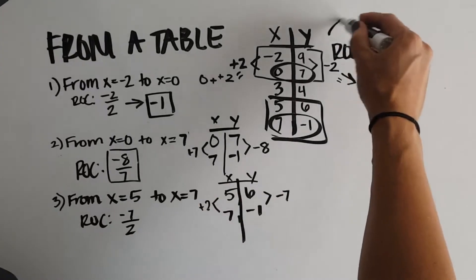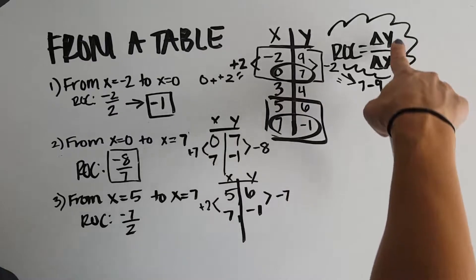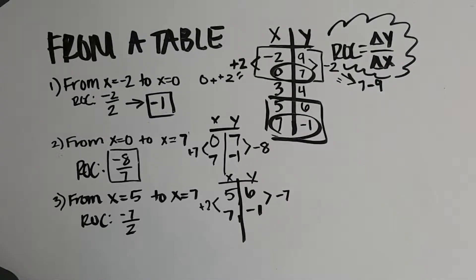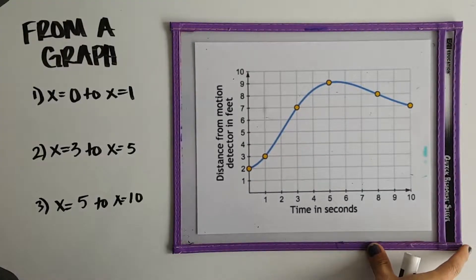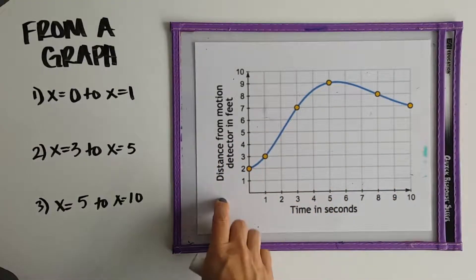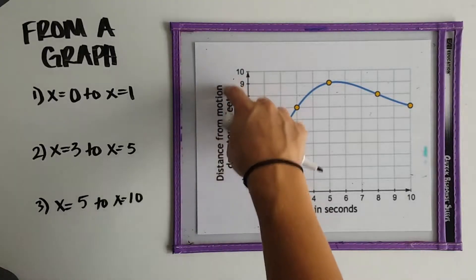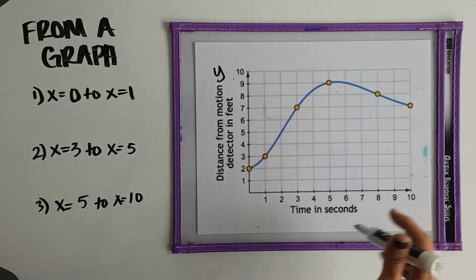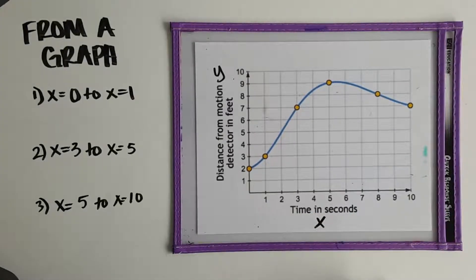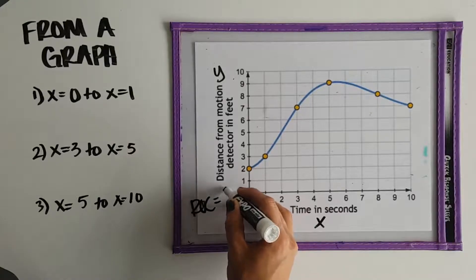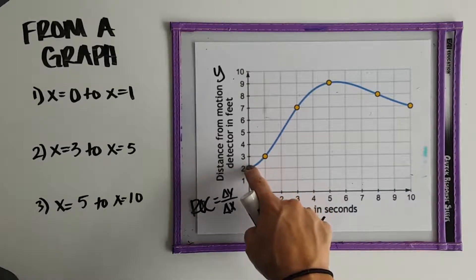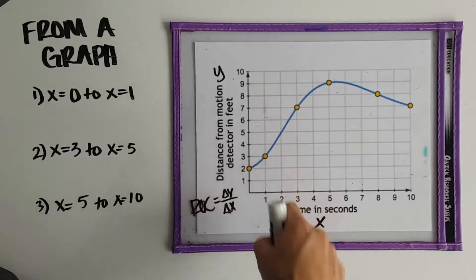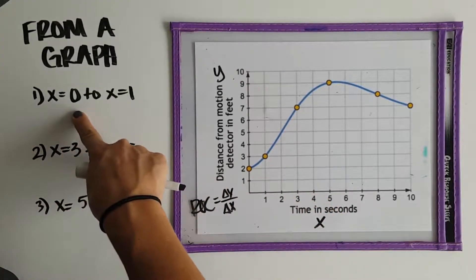This all goes back to the definition: rate of change equals your change in y, your difference in y, divided by your difference in x. Now let's look at it from a graph. When finding rate of change from a graph, remember that y values are on the vertical axis and x values are on the horizontal axis. So rate of change — change in y over change in x — asks how much you go up or down divided by how much you go left or right, on a given interval.